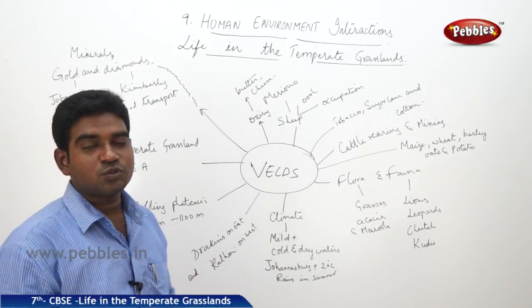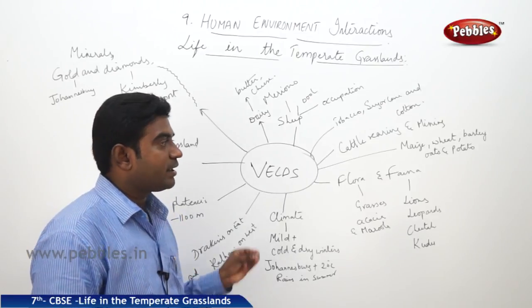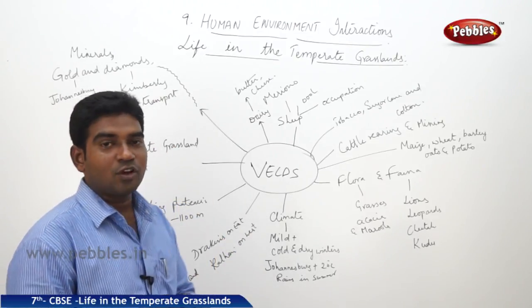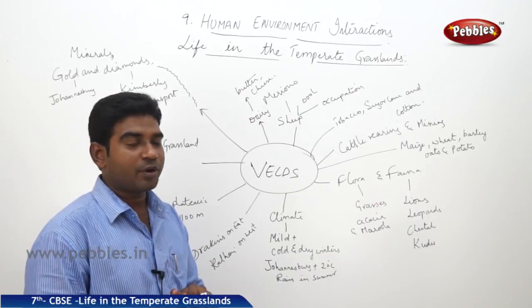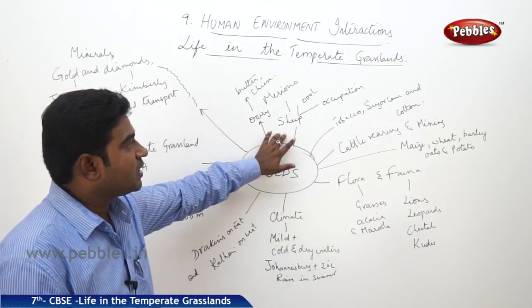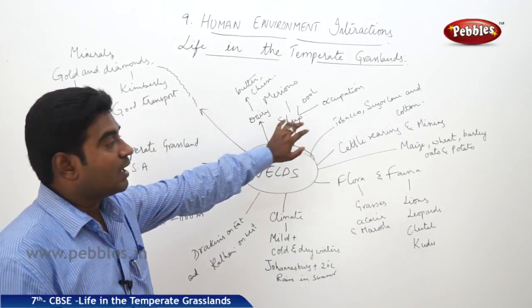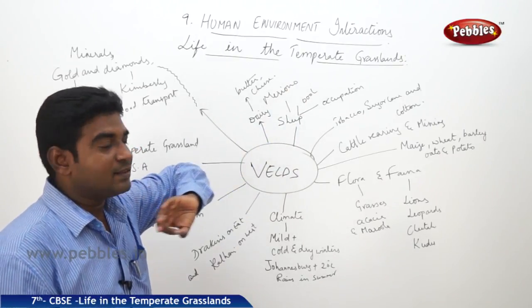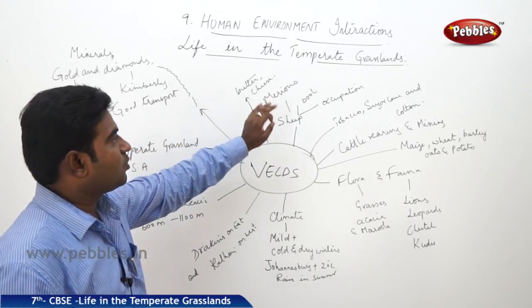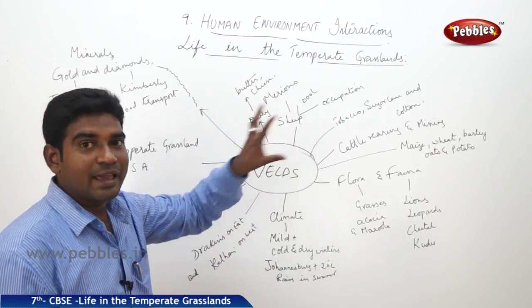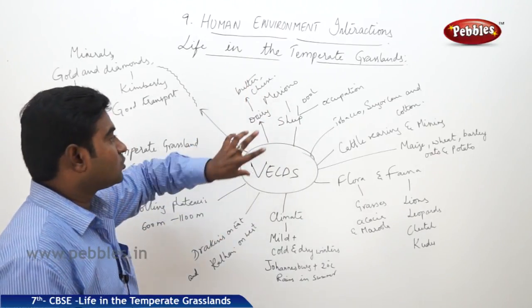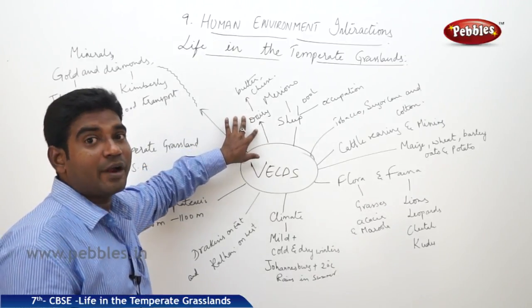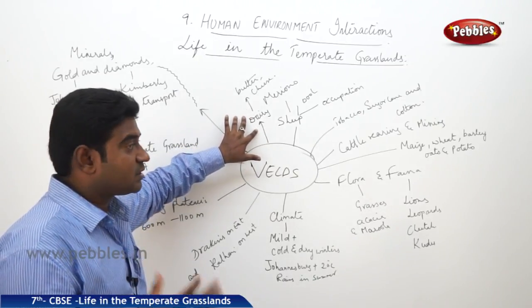Coming to other occupations — cattle rearing and mining are important activities here. Sheep rearing is also an important activity, mainly for the collection of wool. A special breed known as the merino breed is reared here. Dairy farming is also done here, where milk, butter, and cheese are produced exclusively for local needs.